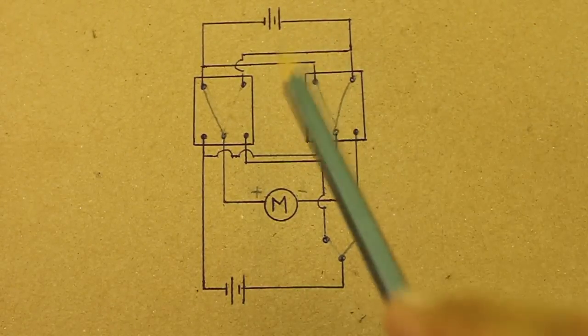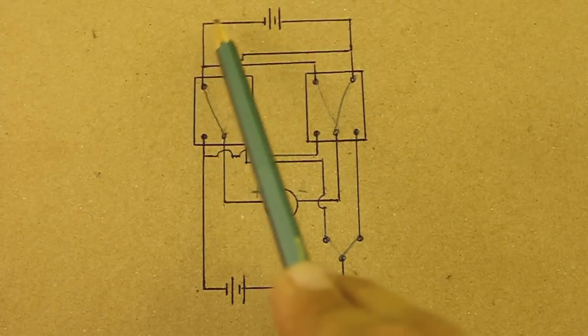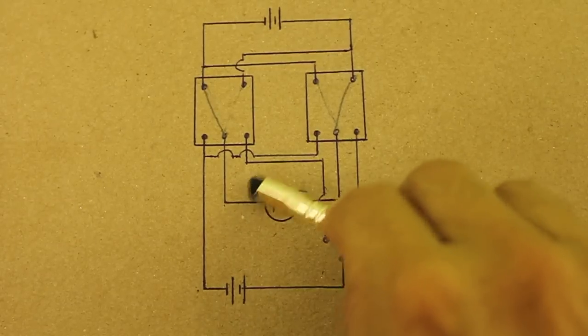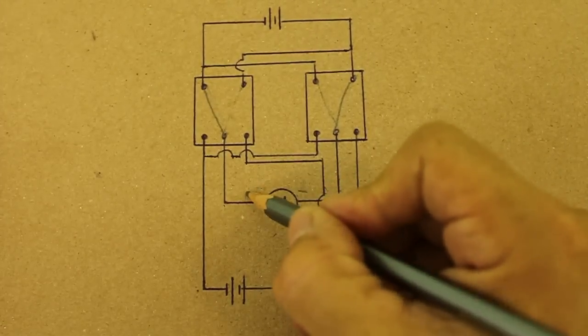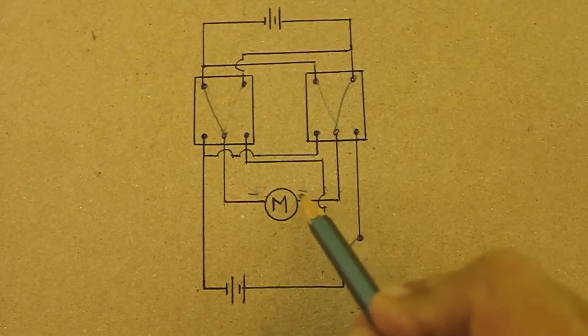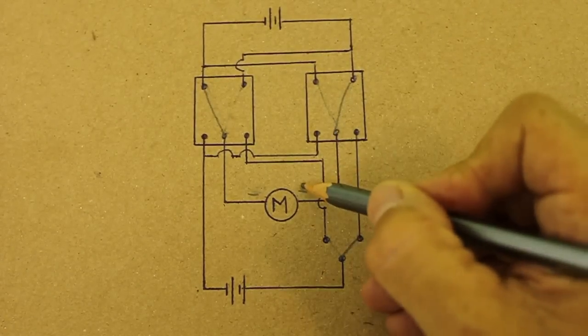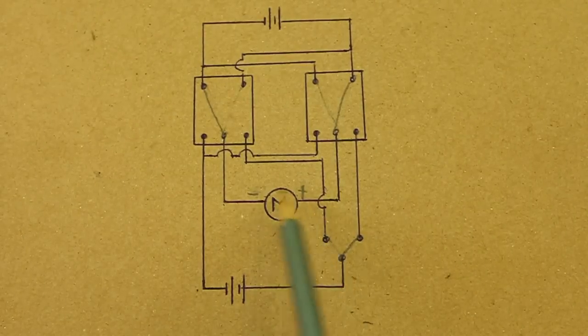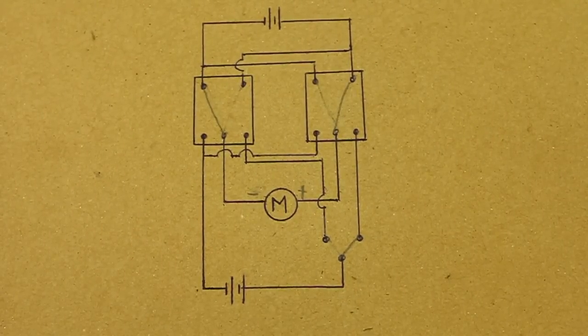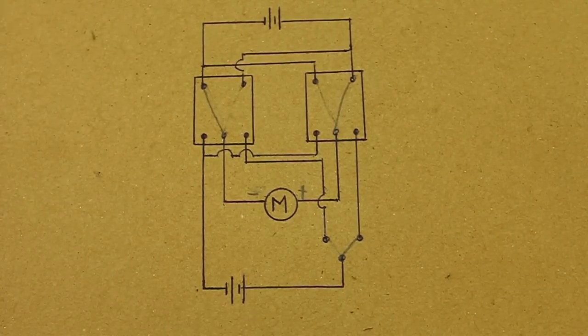Now we have this side that goes to negative, and this other contact of the motor goes to positive. The polarity is inverted and the motor turns in the other direction.